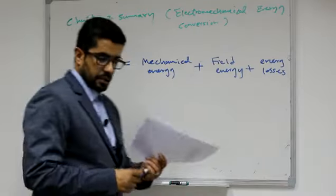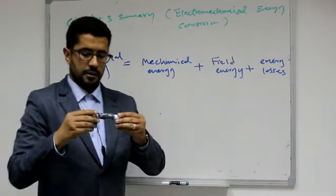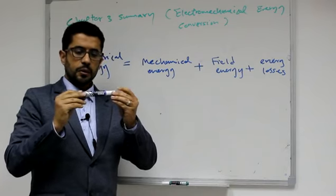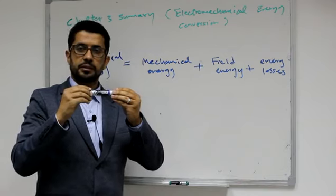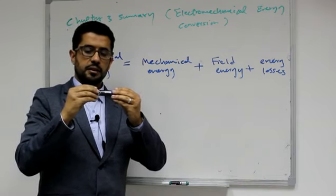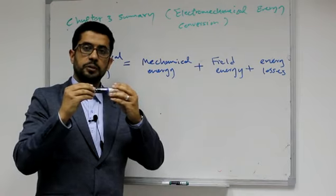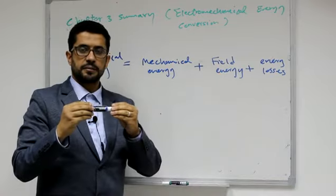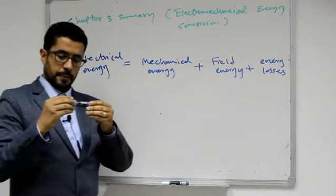For example, if we have a conductor placed in a magnetic field, this conductor will not experience a mechanical force until a current flows in it. The current flowing in the conductor alone is not enough to create mechanical power — it must also be placed in a magnetic field. This is what we mean by field energy.